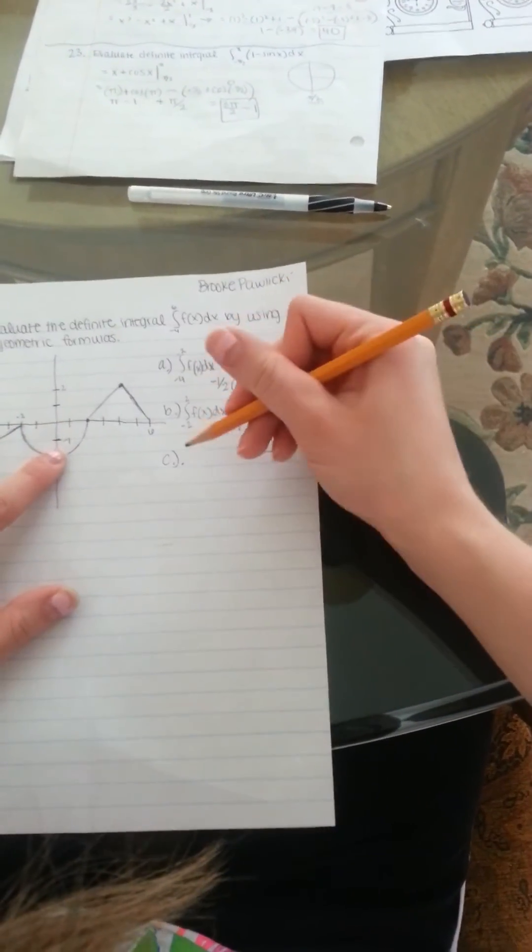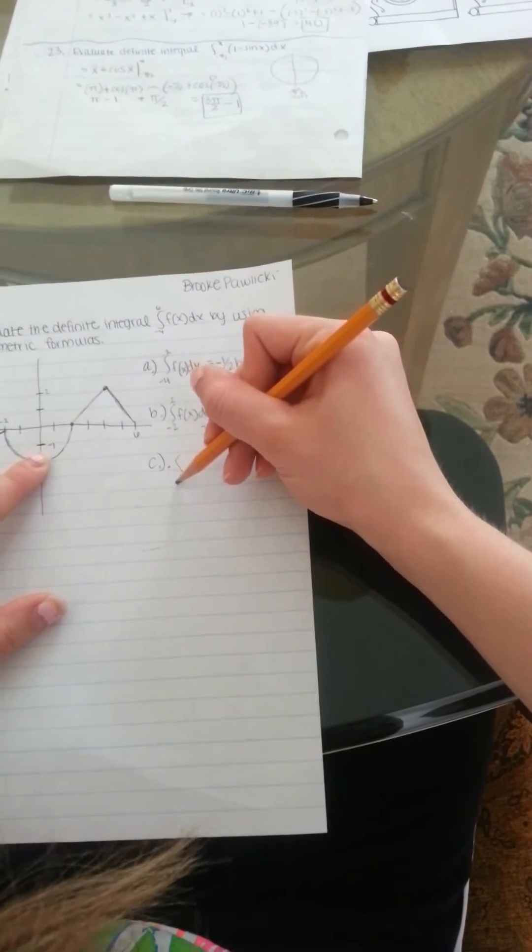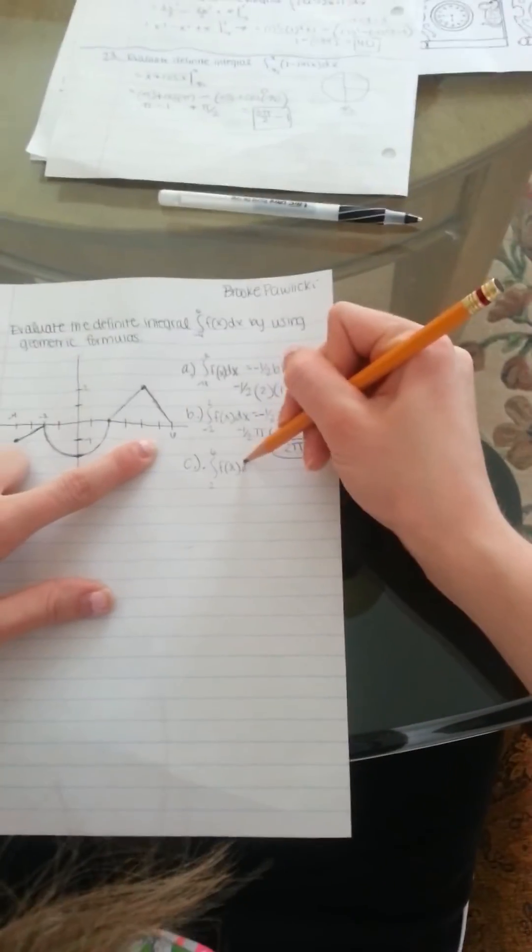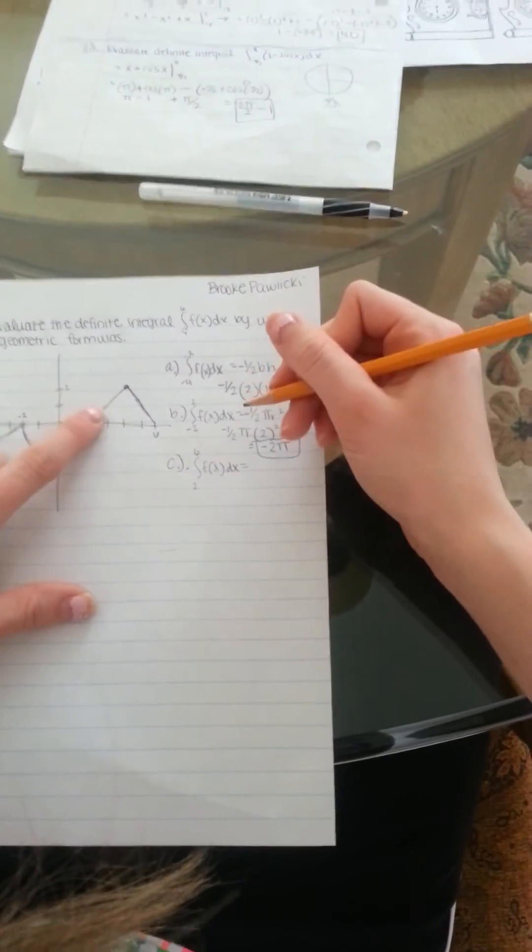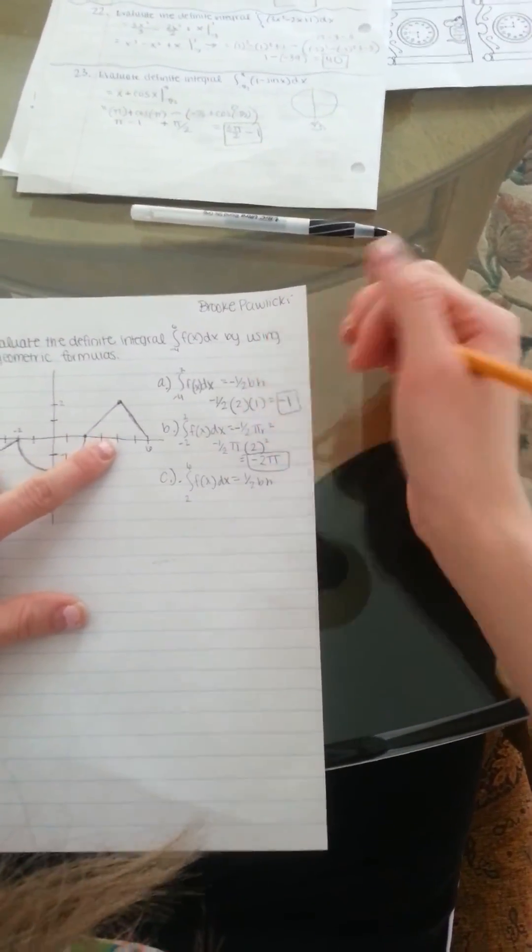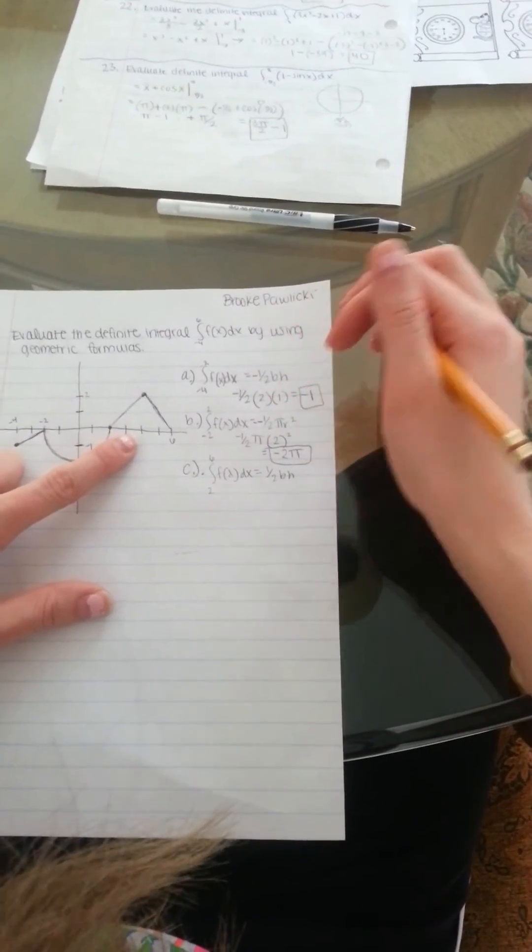For the third shape it's from 2 to 6, f of x dx equals, it's a triangle so it's 1 half base times height and it's above the x axis. So we don't have to worry about any negative sign.